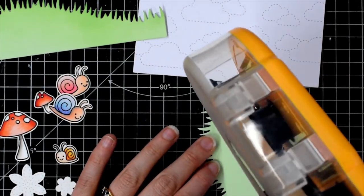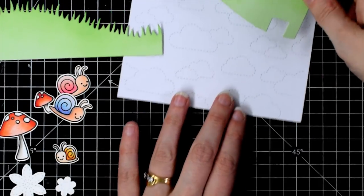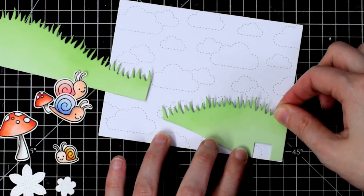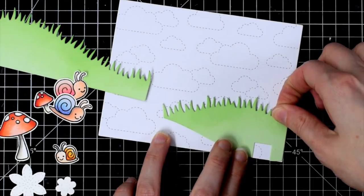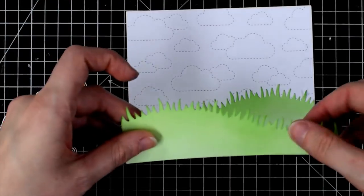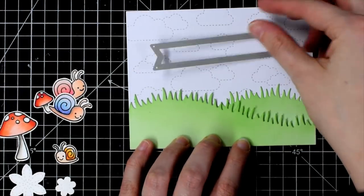So I used Mowed Lawn Distress Ink to do that and first and foremost I'm going to stick down this little piece to my card base. Now there is a notch cut out of this because it's supposed to go on the pop-up die, but that's okay because by the time my card is finished you won't actually be able to see that little notch at all.